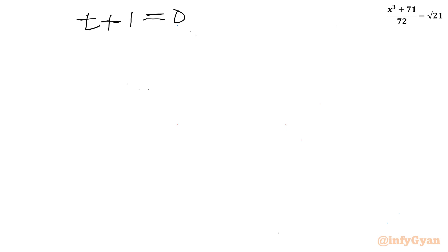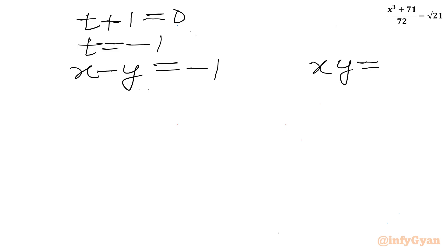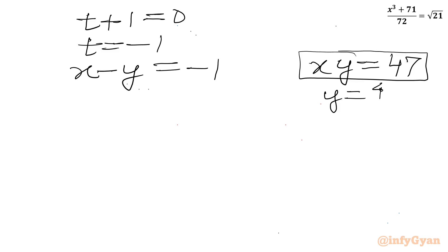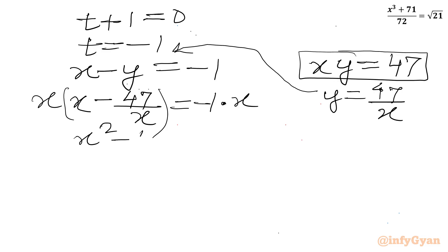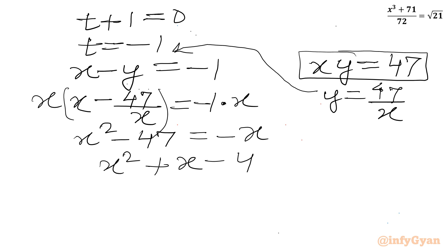So t + 1 = 0, which gives t = −1. Since t was our substitution x − y = −1, and our equation 2 is xy = 47, we can write y = 47/x and substitute: x − 47/x = −1. Multiplying both sides by x gives x² − 47 = −x, or x² + x − 47 = 0.